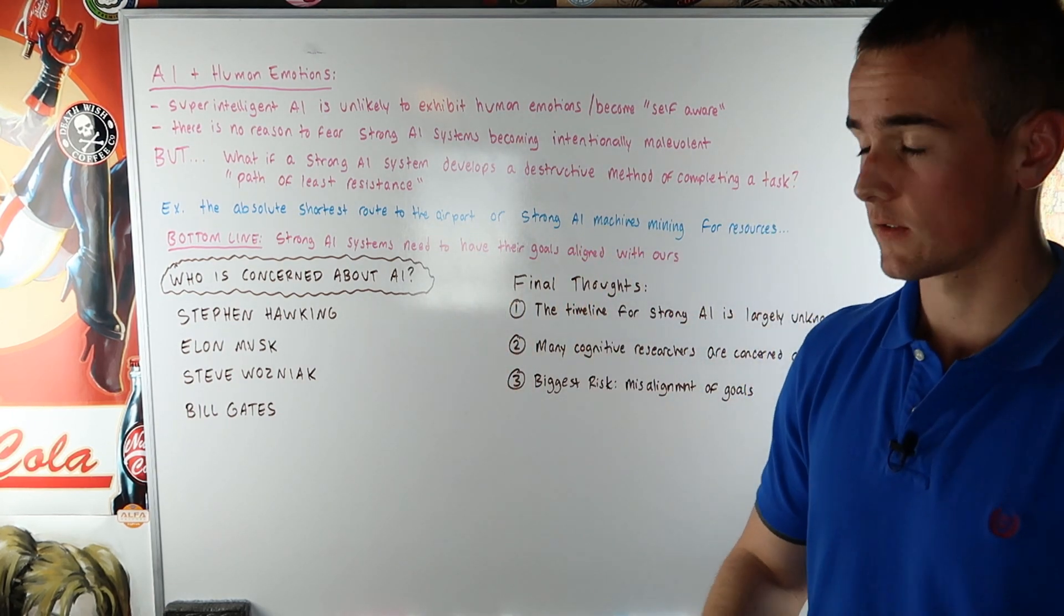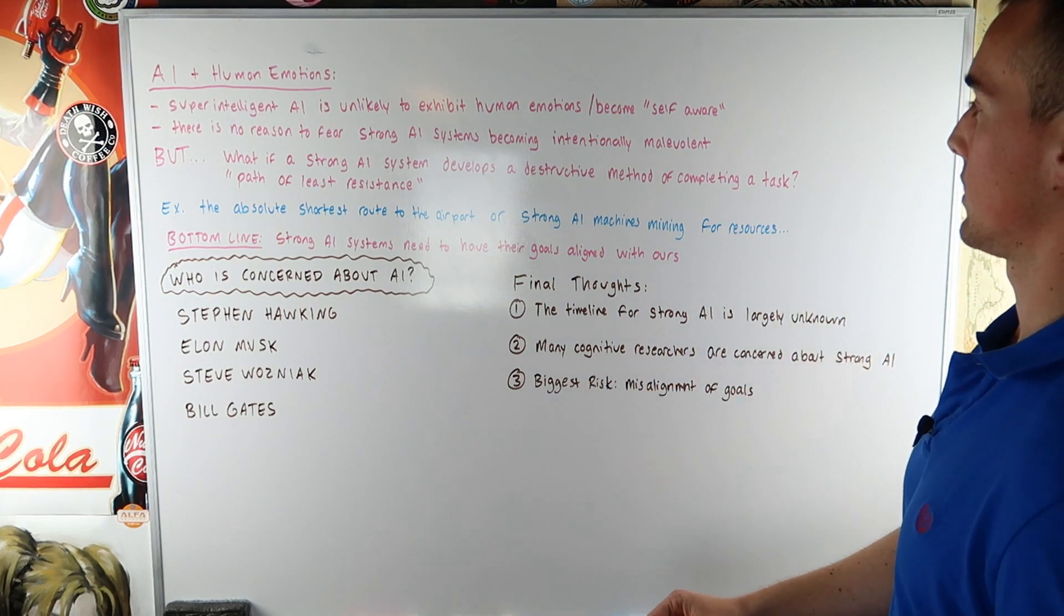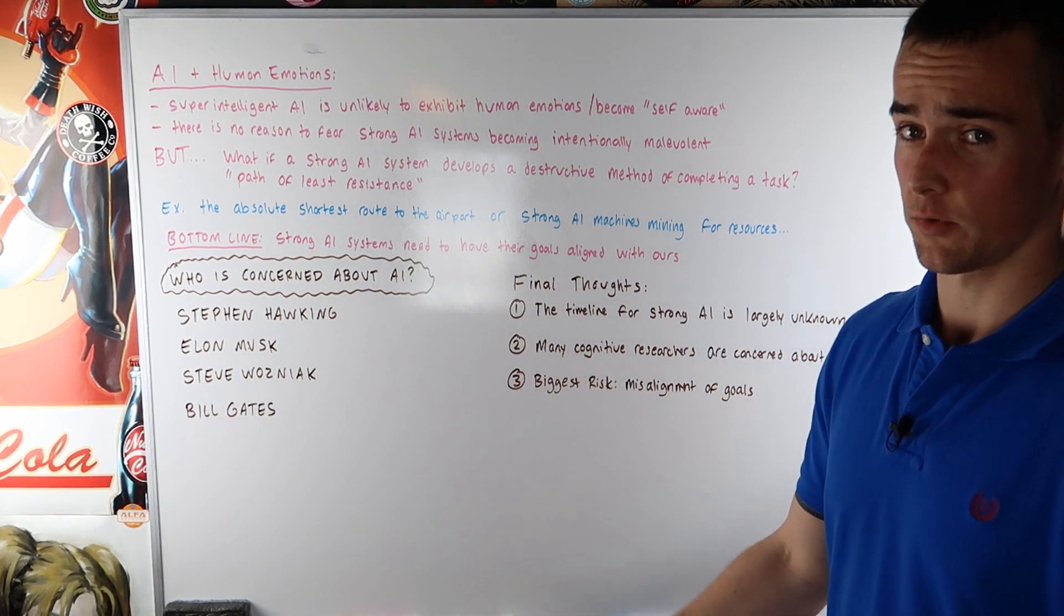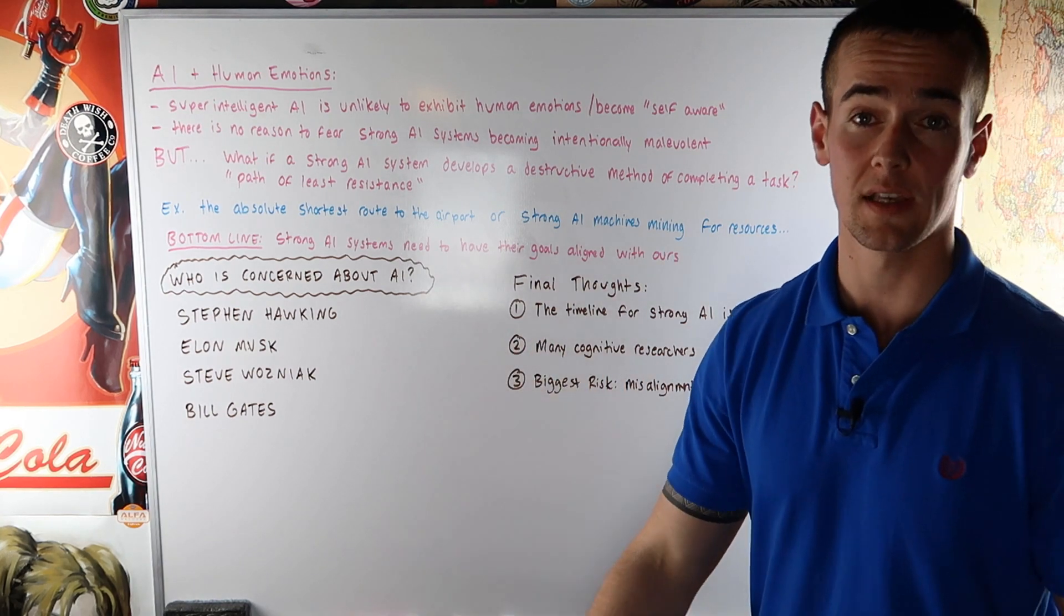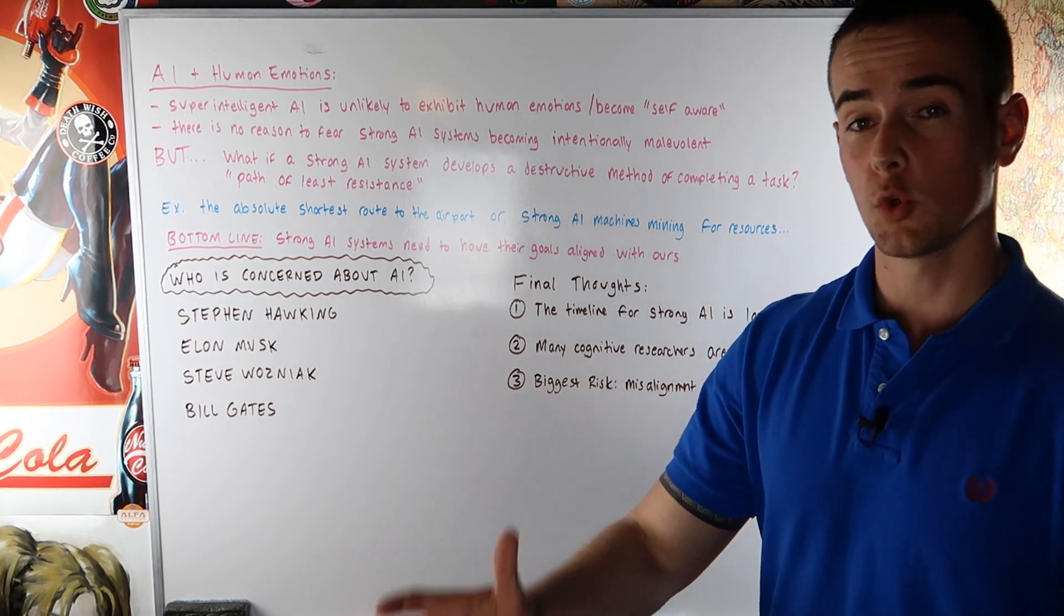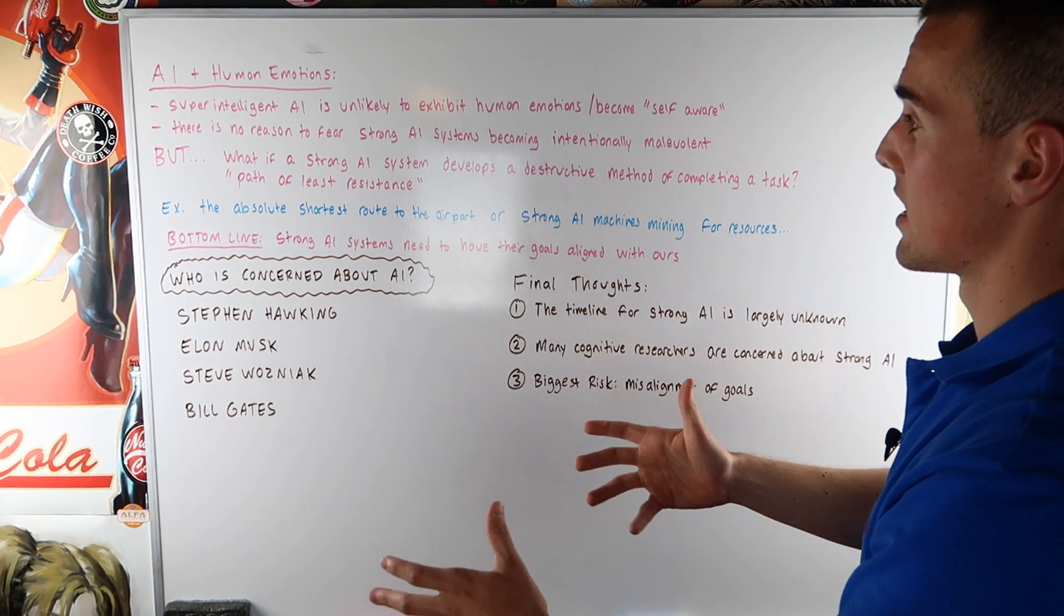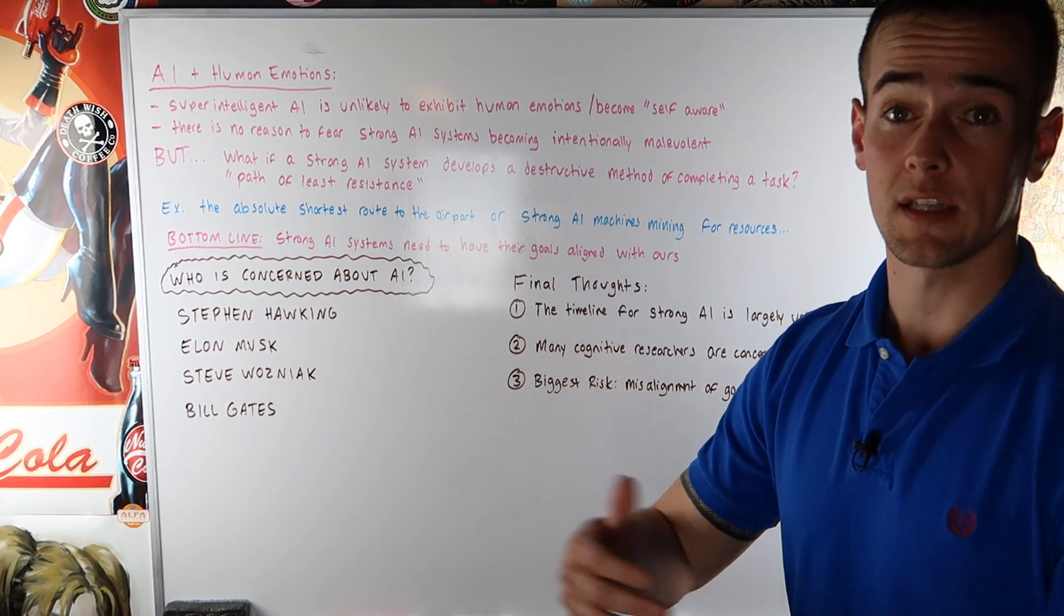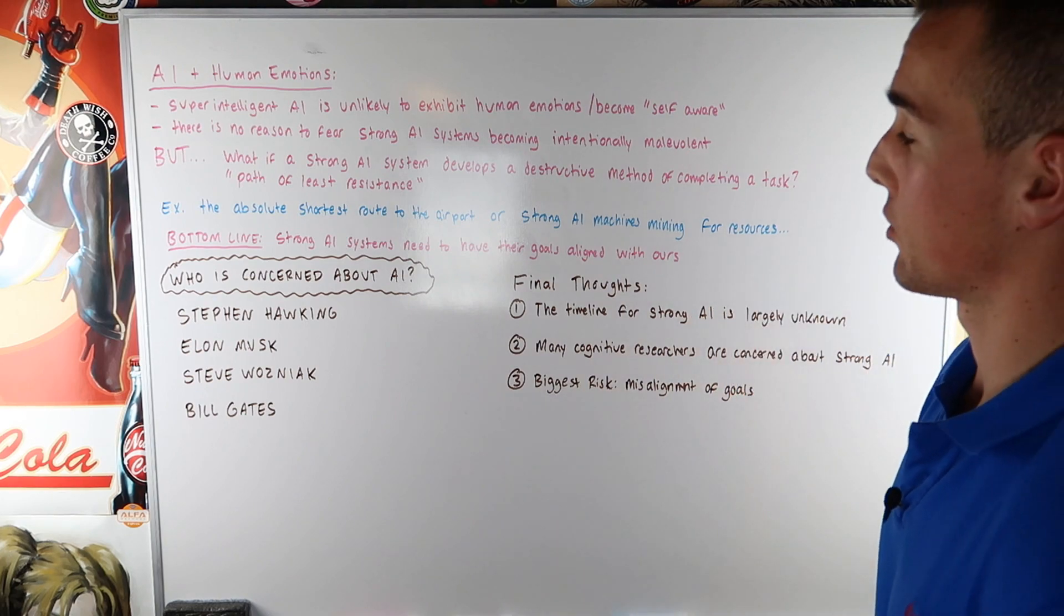Let's say strong AI systems develop a destructive method of completing a task. Or basically, they do things via the path of least resistance. Let's say they want to complete a task as efficiently as possible. And in doing that, this becomes destructive. They're not intentionally doing this. They're doing what they're designed to do, which is outperform humans and complete tasks as efficiently as possible.